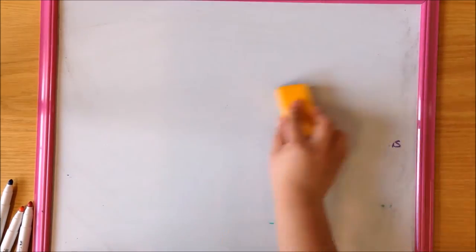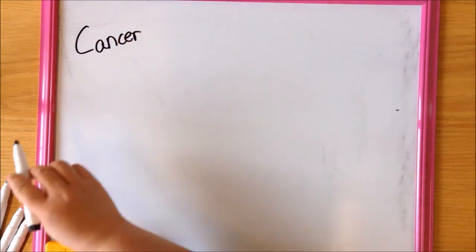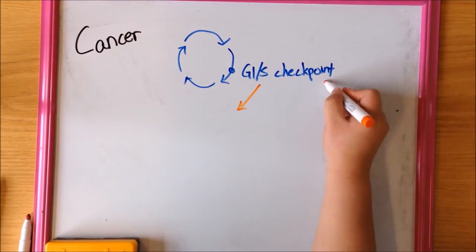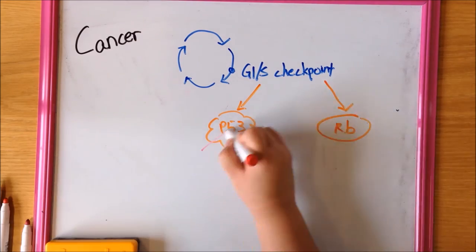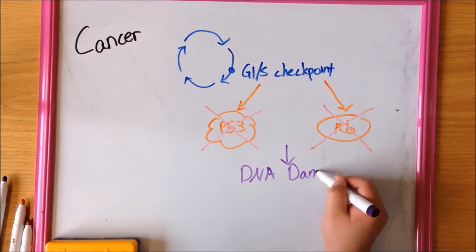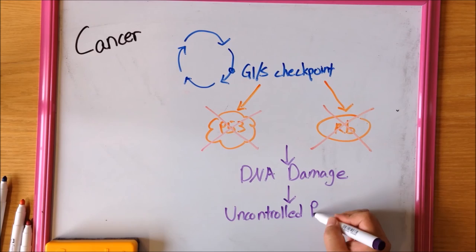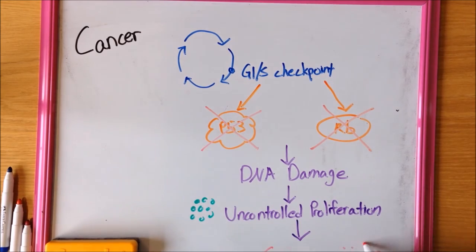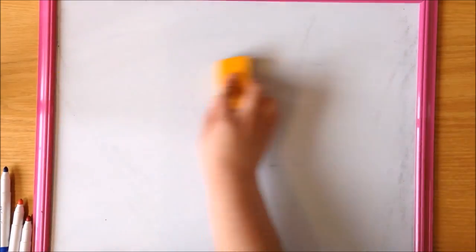But what would happen if either of these tumor suppressor genes are inactivated due to a hereditary or sporadic mutation? This change would inhibit the normal functional role of P53 and RB, which results in the accumulation of DNA damage. This in turn means control over the cell cycle will be lost, leading to uncontrolled proliferation of cells. Uncontrolled cell proliferation ultimately leads to cancer.